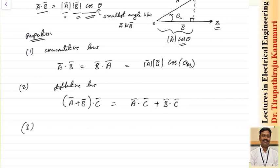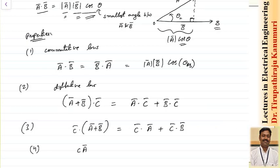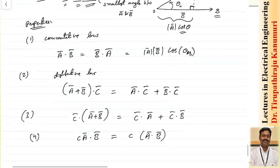Similarly, c dot (a plus b) can be written as c dot a plus c dot b. Also, if I am multiplying a scalar c with a vector a, then taking the dot product with b, this will be nothing but c I can separate out — you can do the dot product between a and b, then multiply by c. It is not going to affect.